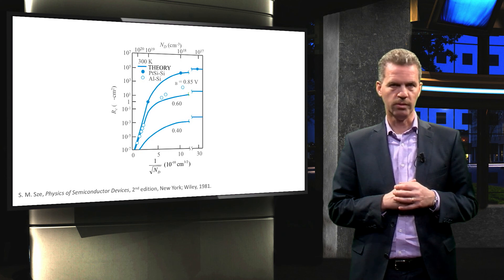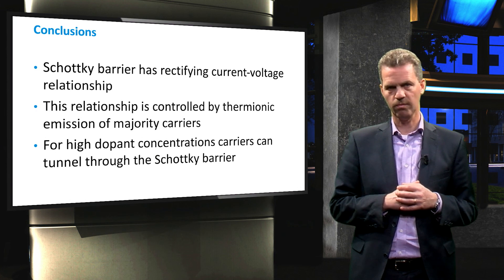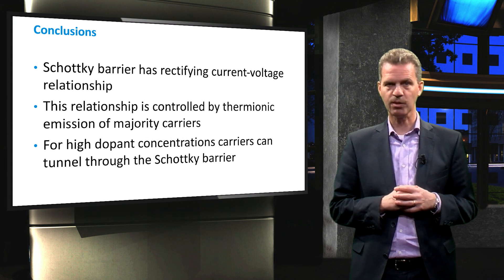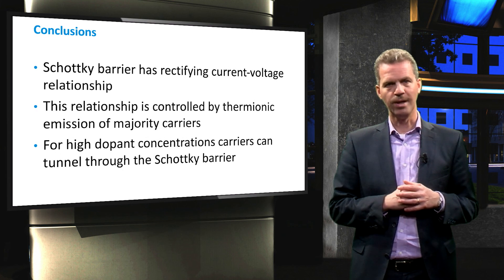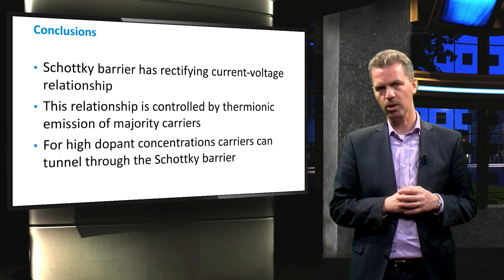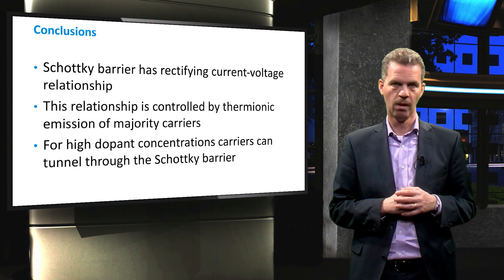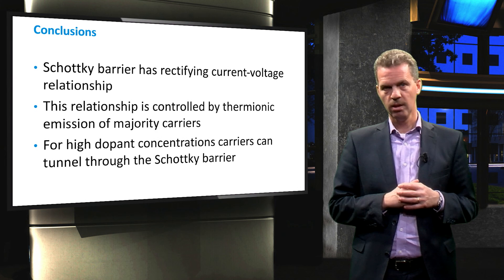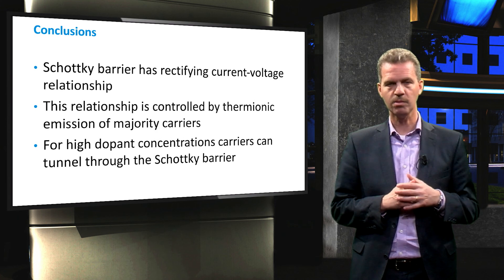In conclusion, the Schottky barrier junction has a rectifying current-voltage relationship, meaning that the current density depends exponentially on the voltage. This relationship is controlled by thermionic emission of majority carriers across the Schottky barrier. For high doping concentrations, the effect of the Schottky barrier can be mitigated by tunneling of charge carriers through the barrier.